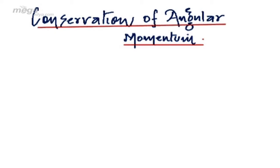Hi friends, this is Abhishek Kumar from Megavidya and today we are going to discuss the conservation of angular momentum. It says that if the external torque acting on the system is zero, the net angular momentum remains conserved.